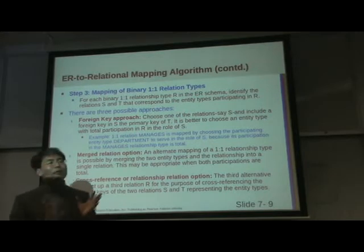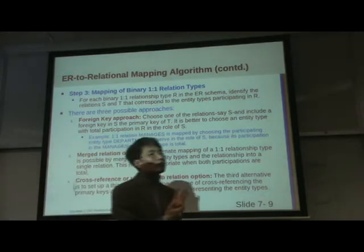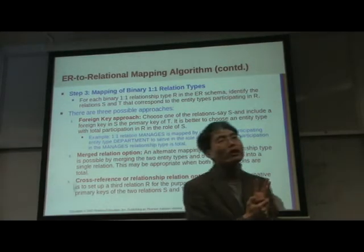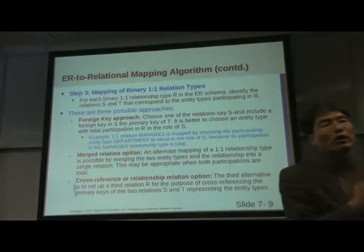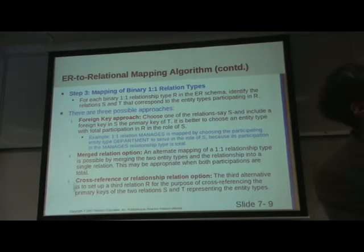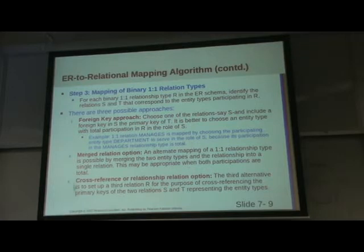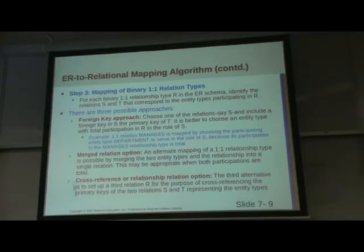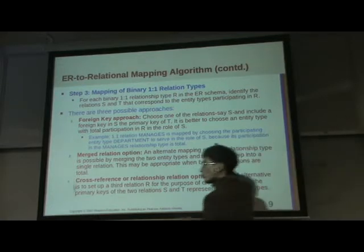The next step is relationship types. We converted the strong entity and the weak entity. Now how many different types of relationships are there? Three: one-to-one, one-to-many, and many-to-many.